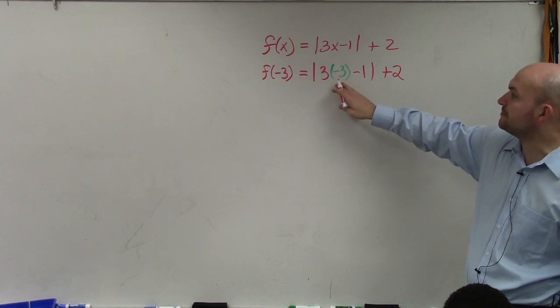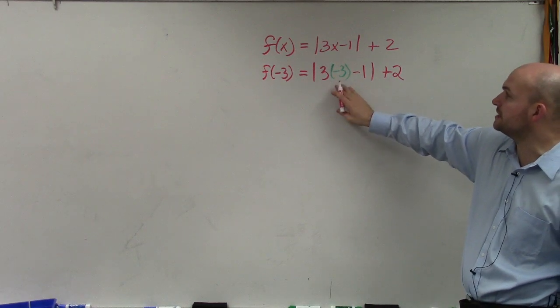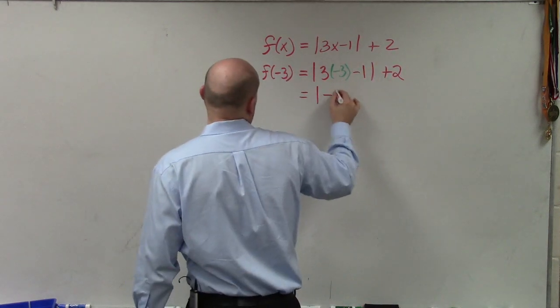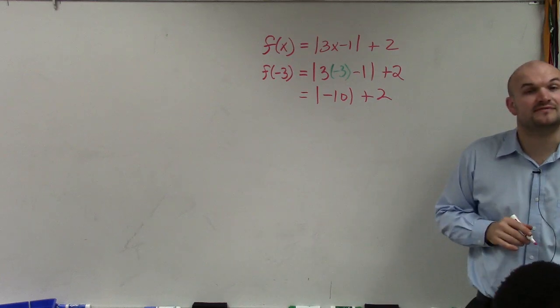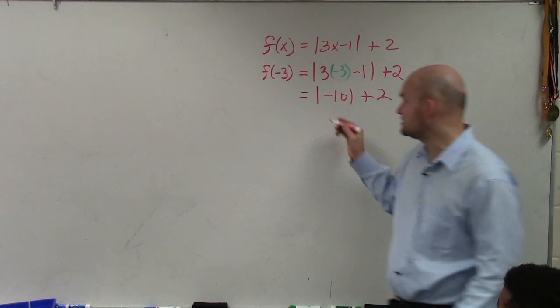Then we do negative 3 times 3, which is negative 9. Minus 1 is negative 10. The absolute value of negative 10 is positive 10.